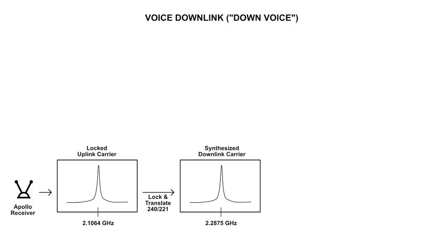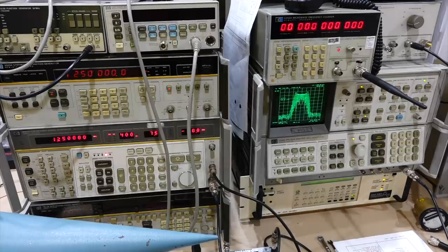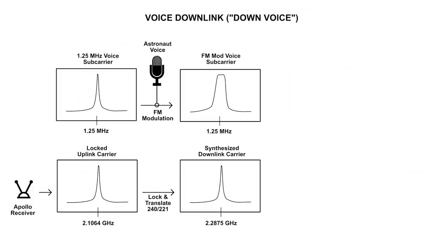Now we want to add voice, and for that, we are going to need a subcarrier at 1.25 MHz. We are then going to modulate the voice onto that subcarrier, using FM modulation. That will give us a modulated carrier, centered on 1.25 MHz, that looks something like this on the spectrum analyzer. Next, we take that signal, and use phase modulation this time, to modulate our downlink carrier.